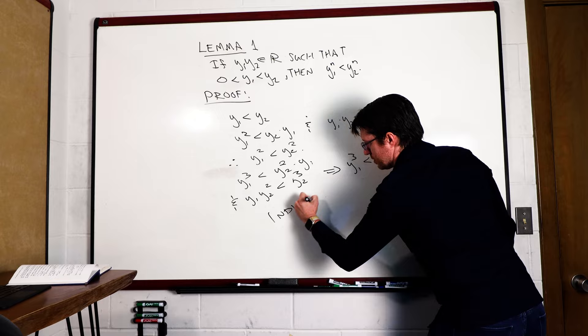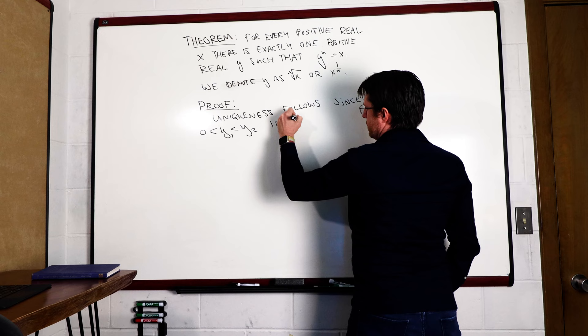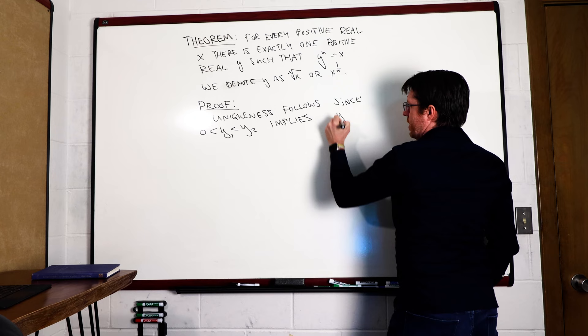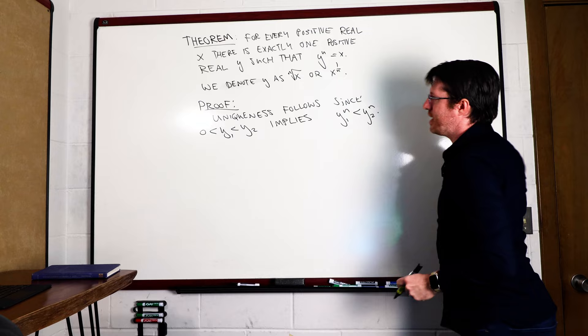So here only one line into this proof and we already had to make a whole lemma to justify that first implication. Let's read it again. That there is at least one such y is clear since 0 is less than y1 which is less than y2 which implies that y1 to the nth power is less than y2 to the nth power. Okay that inequality makes sense now. That was tedious to prove but we are building mathematics up from scratch here. It should get tedious somewhere.